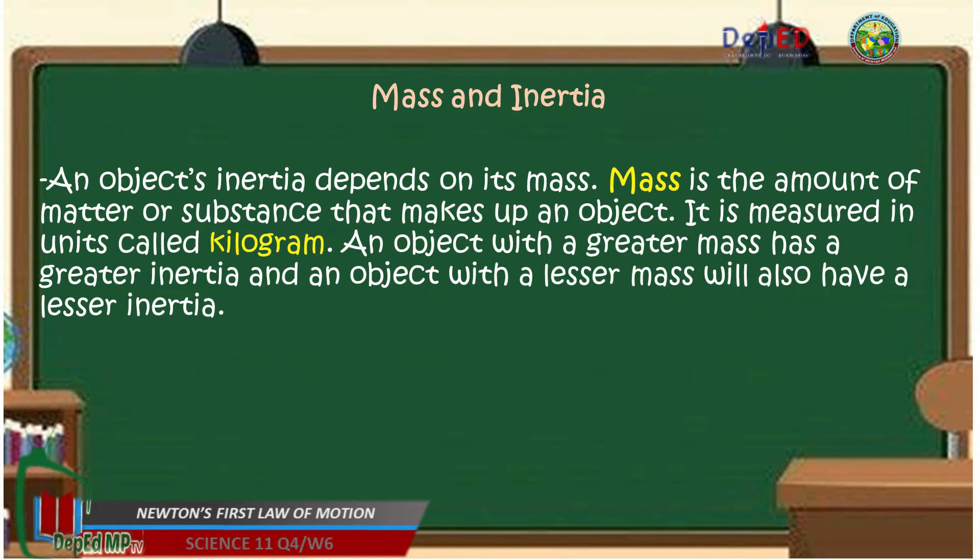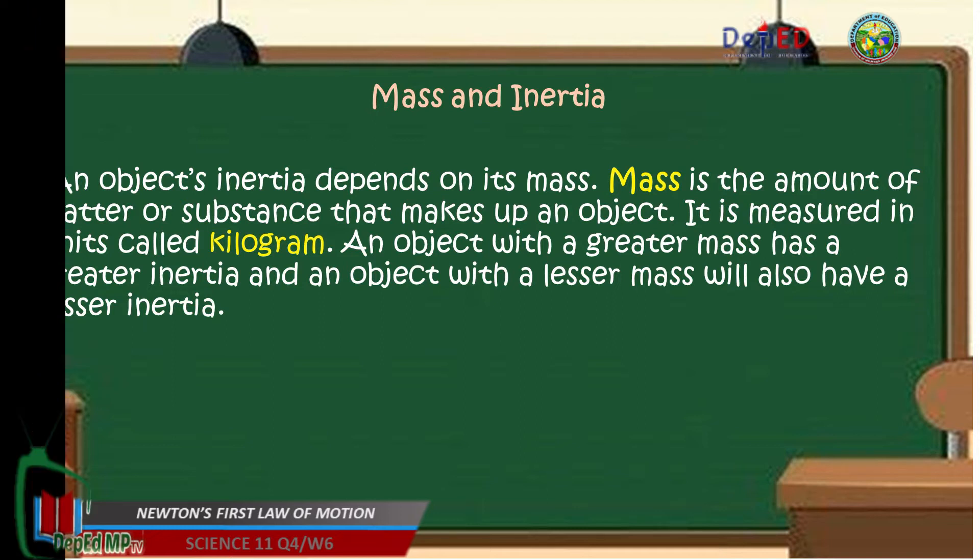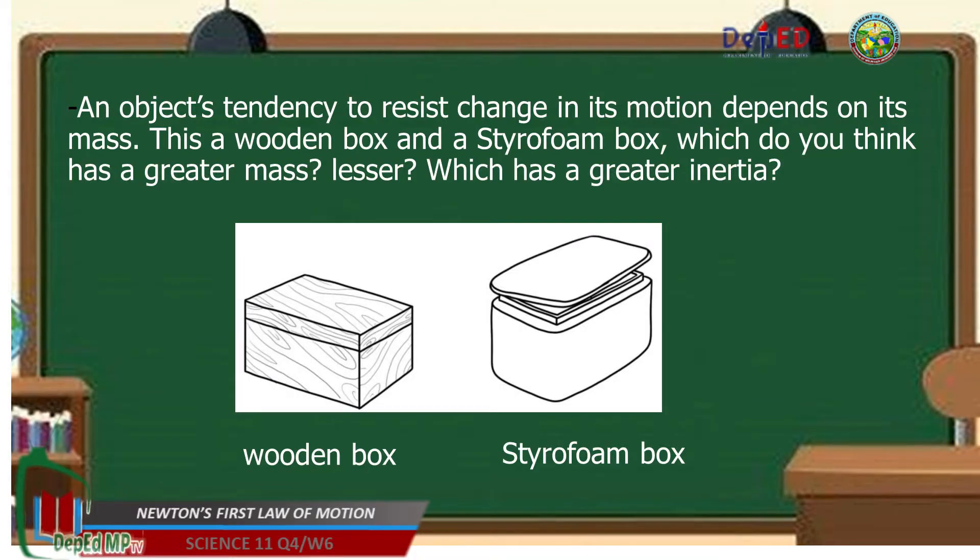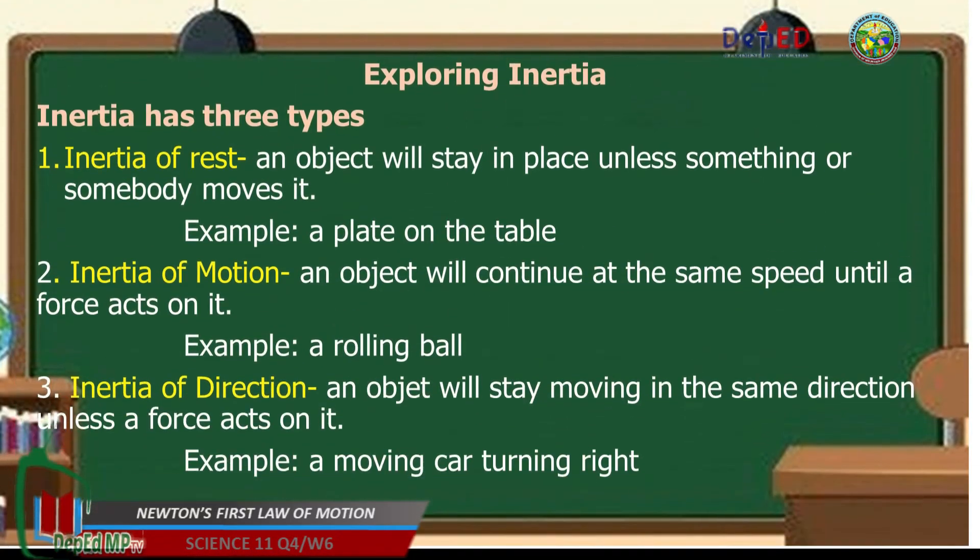Okay, so we will discuss what is mass and inertia. An object's inertia depends on its mass. What is this mass? It is the amount of matter or substance that makes up an object. It is measured in units called kilogram. An object with a greater mass has a greater inertia. And an object with a lesser mass will also have a lesser inertia. Object's tendency to resist change in its motion depends on its mass. This is a wooden box and a styrofoam box. Which do you think has a greater mass? Lesser? Which has a greater inertia? Correct! It is the wooden box. The wooden box has a greater mass. Therefore, it has a greater inertia.